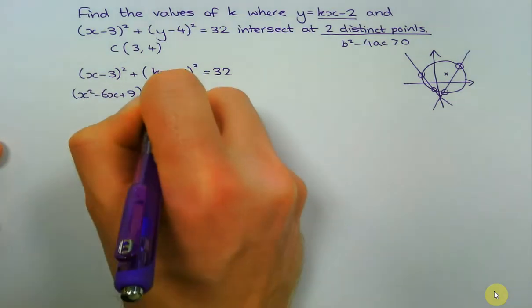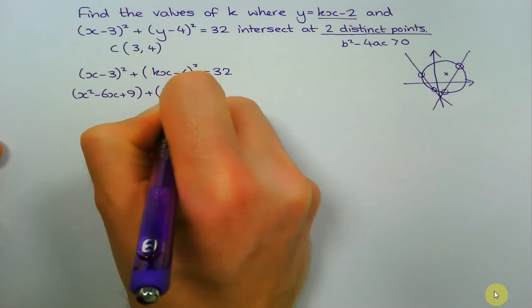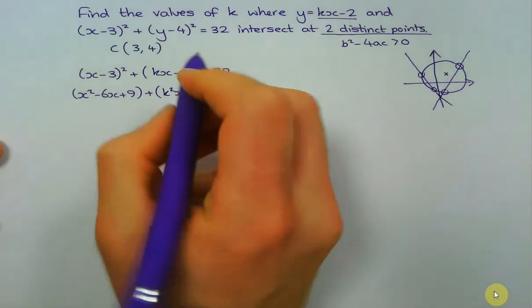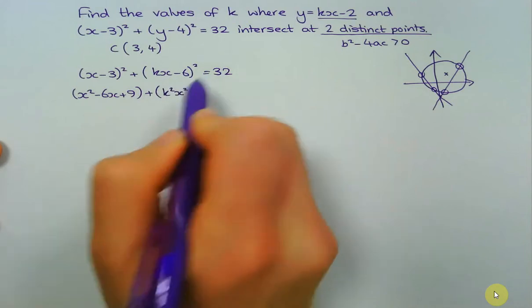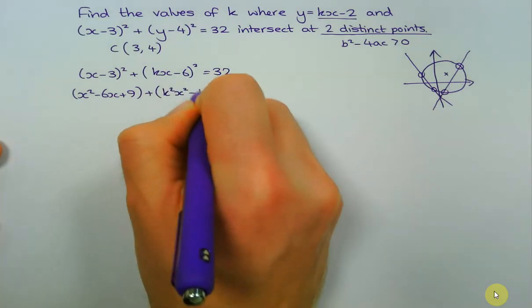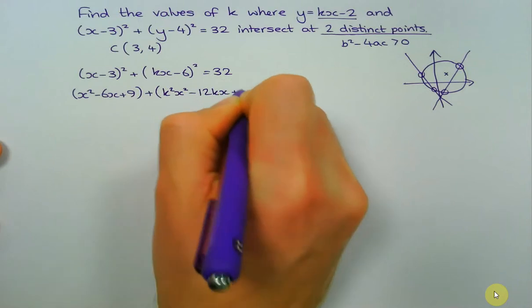So this one's going to be k²x². Then if you do the first multiply by the last, you're going to get -6kx, then that's going to happen twice, so you're going to get -12kx + 36.